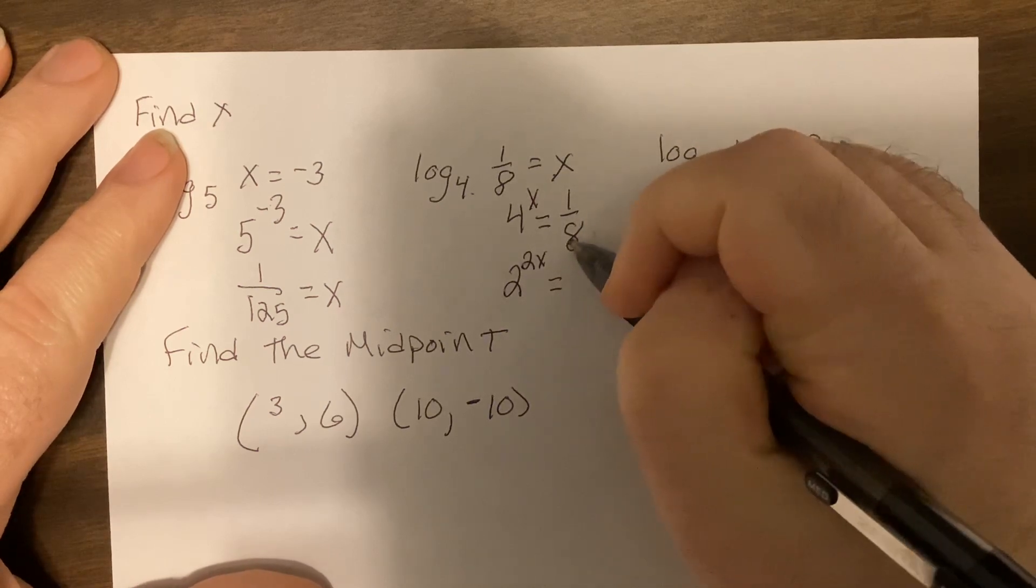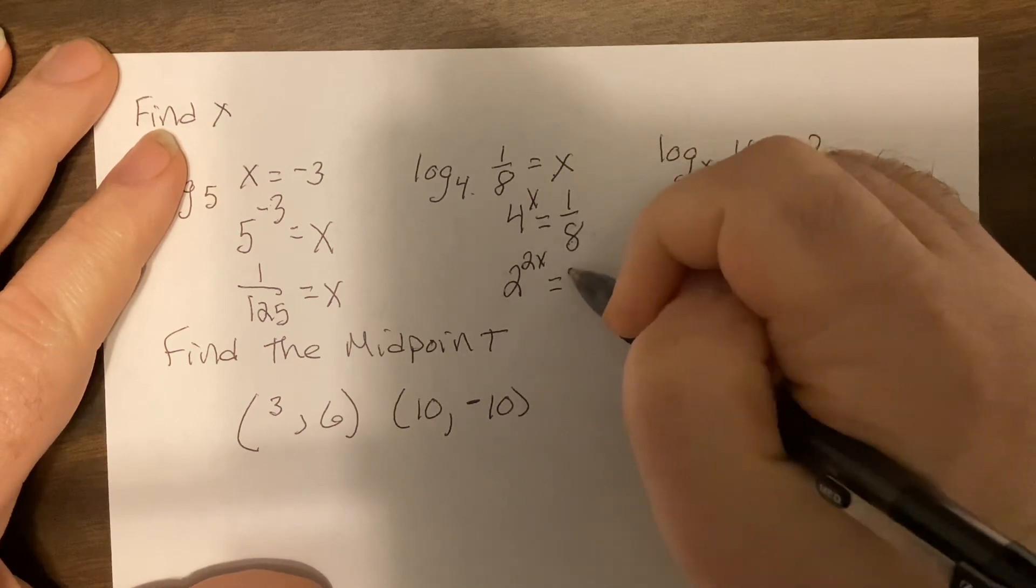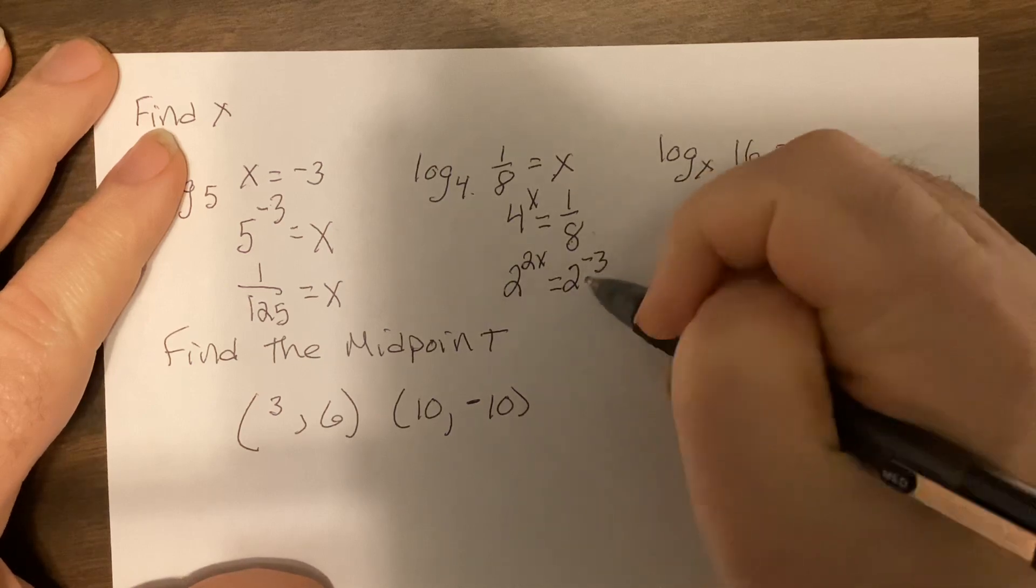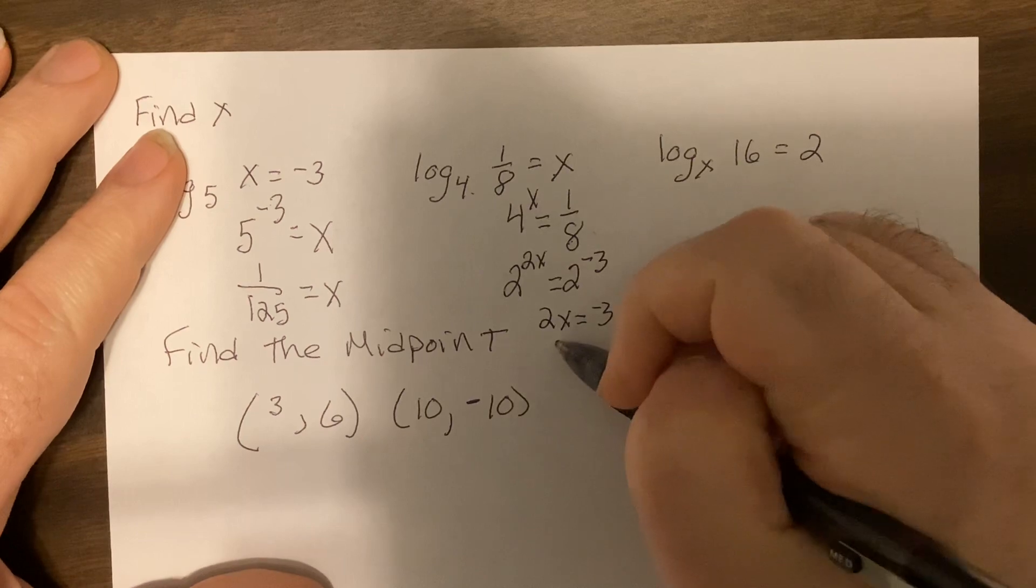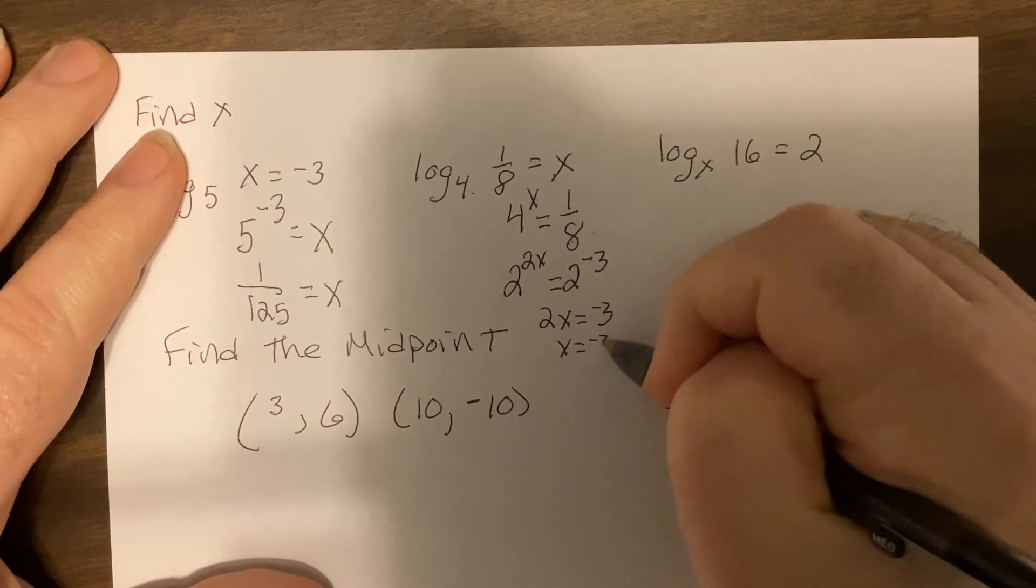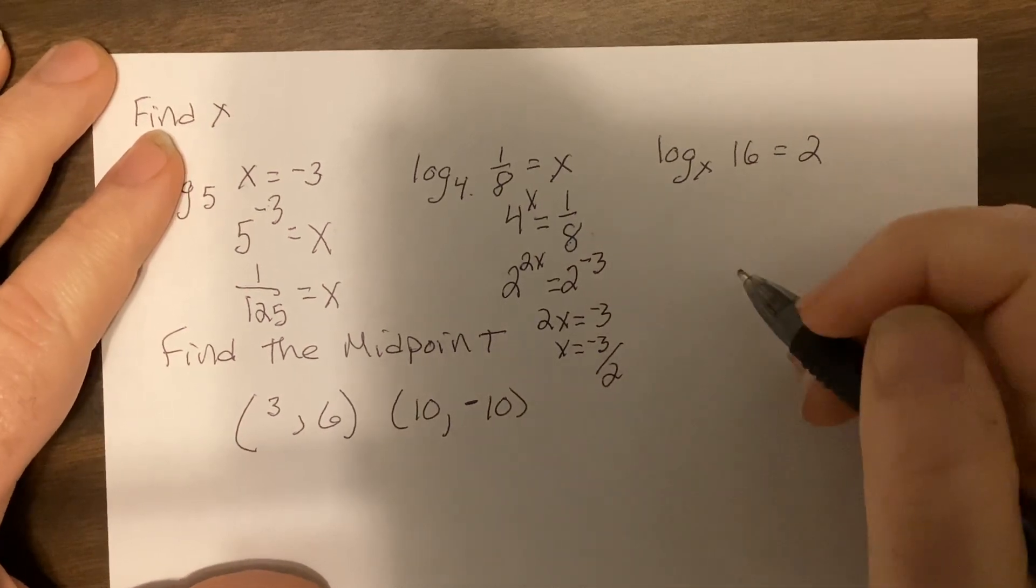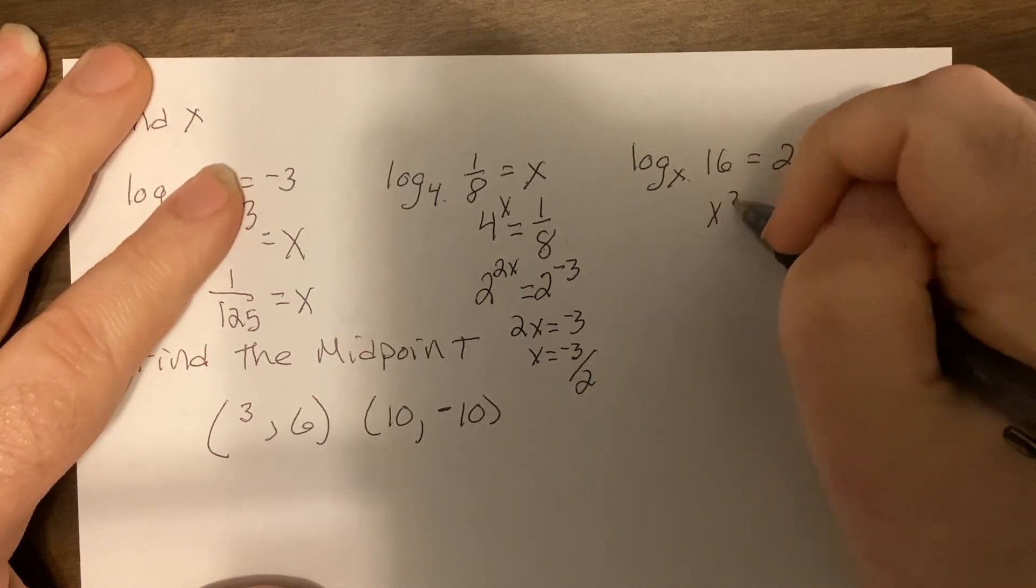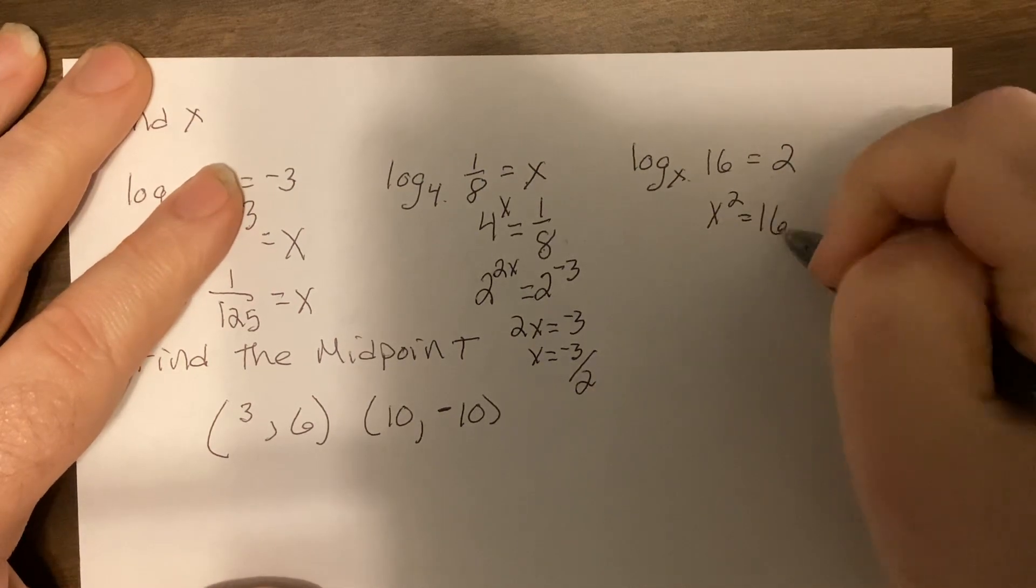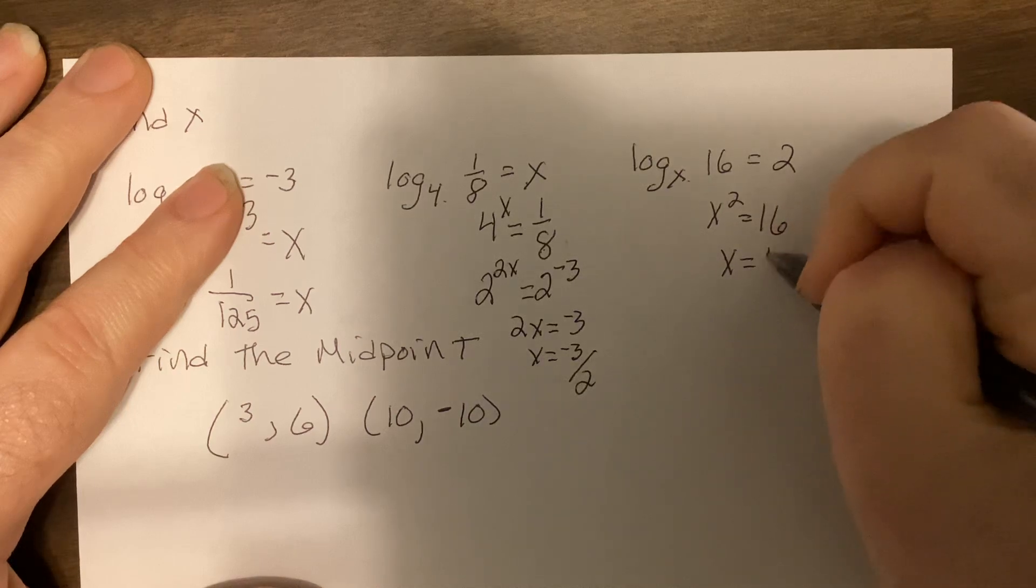Eight is two cubed but I want to bring it up so you make the power negative. So two x equals negative three, so x equals negative three halves. Here, x squared equals 16 so x equals four.